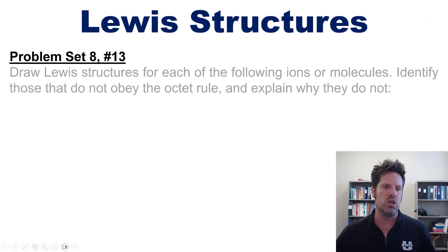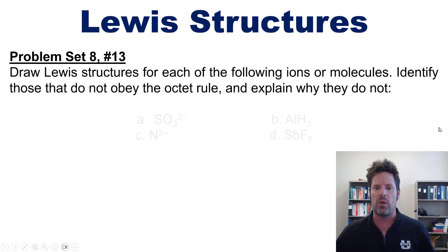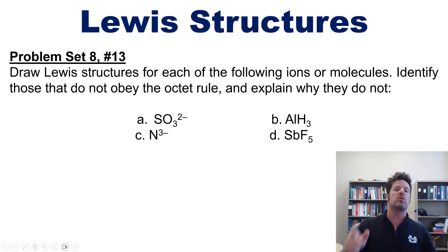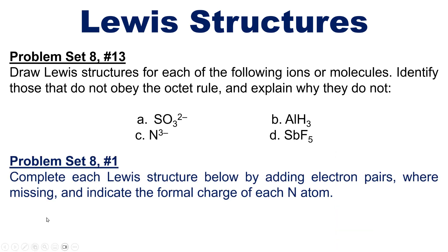I want you to draw Lewis structures for each of the following ions or molecules, then identify those that do not obey the octet rule and explain why they do not. Separately, complete each Lewis structure below by adding electron pairs where missing, and indicate the formal charge of each nitrogen atom. Next,